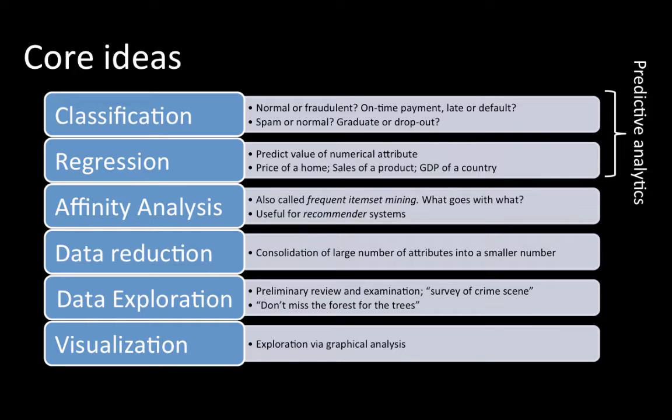Of course, all the examples I gave are all examples in which we had only two categories: fraudulent, not fraudulent; buyer, not buyer; defaulter, non-defaulter. But you could have multiple categories. For example, let's say you have a bunch of automobiles and you want to classify them as good, moderate, bad. So you could have three categories. That is classification.